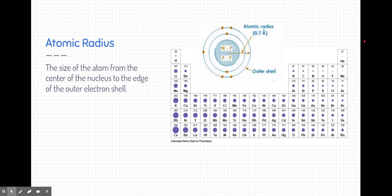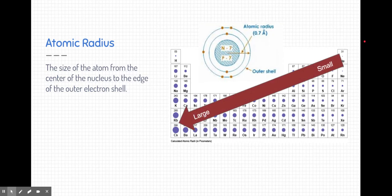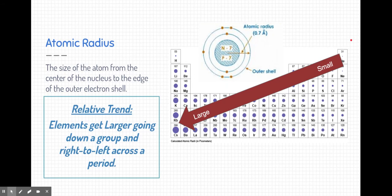If you take a look at this periodic table, organized by atomic radius, the relative atomic radius, you might be able to see a trend. If you notice, in the upper right-hand corner, the elements are relatively small. They have a small radius. In the lower left-hand corner, the elements are very large. That is the relative trend on the periodic table.